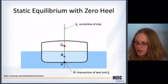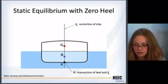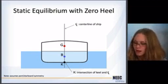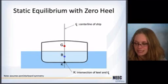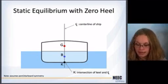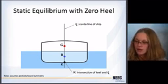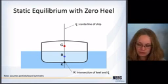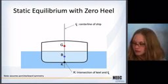For a ship here, going back, we have G and B when it's in static equilibrium. G and B will be aligned on the center line of the ship, almost always. Where the center line of the ship intersects the keel, we're going to call that a new point, K, because we'll use that in the next lecture. This assumes port and starboard symmetry with the ship, which is generally the case, so you're pretty safe there.